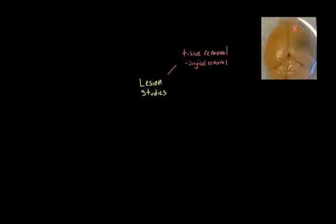And while this can be done with a scalpel, it can also be done through surgical aspiration. And this involves literally sucking out brain tissue. But tissue removal is a little bit limited, because you can really only use it for removing structures on the surface of the brain.